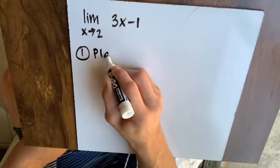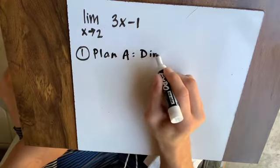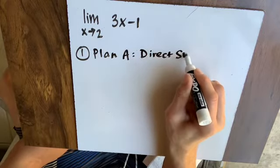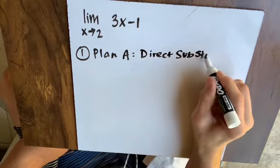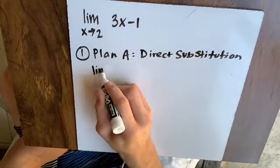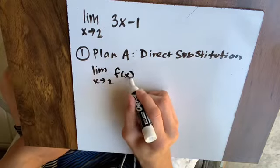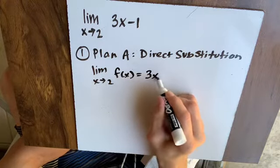Plan A will always be direct substitution. So what does this mean? If I'm given limit x approaches 2 of the function f of x equals 3x minus 1,